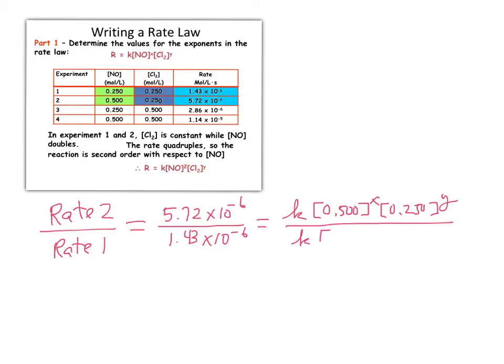That has to equal K times the concentration of NO in experiment two, which was 0.500 raised to some power x, times the concentration of Cl₂, which is 0.250 raised to some power y. In the denominator, same thing, except it's a different concentration for NO, but still raised to that same power x and 0.250 to some power y.